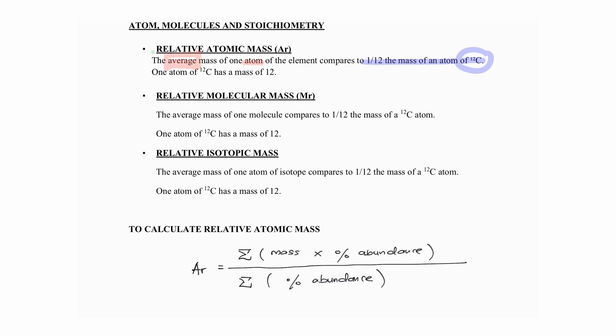The first sentence gives us 1 to 2 marks in paper 2. If it is a 3-mark question, the last sentence is important — one atom of carbon-12 has a mass of 12. The same goes for relative molecular mass, which is also the average mass of one molecule compared to one-twelfth of the mass of carbon-12.